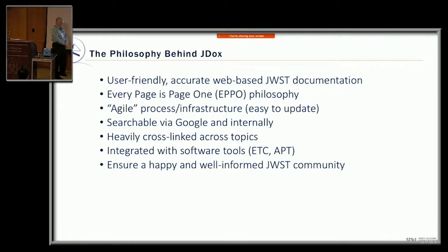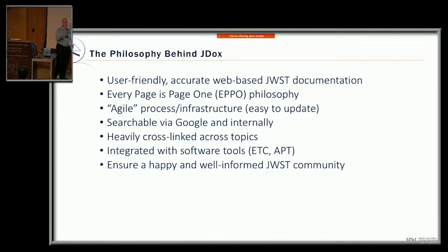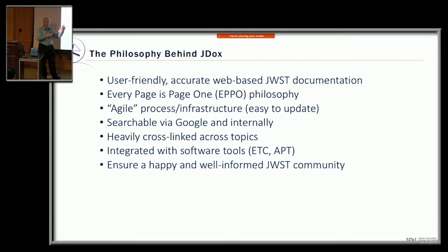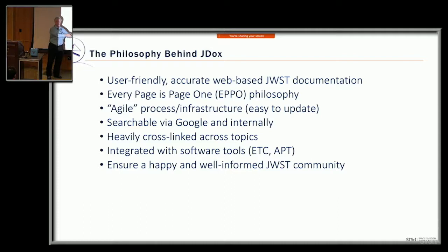The philosophy behind JDocs is the idea of 'every page is page one.' That's actually a technique of documentation. The idea is that you write each article to be a self-contained unit at a certain level of information. You'll see overview articles and then subsequent articles that go into detail. Each thing you land on in JDocs is intended to be at a particular level — either detailed or higher level — and understanding that is important if you search and land in the middle of 700 articles.